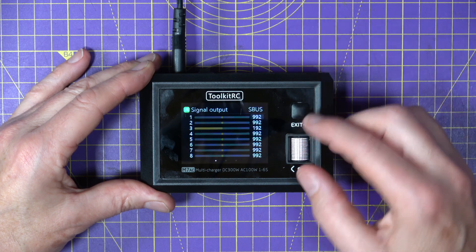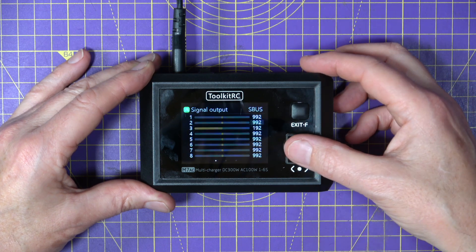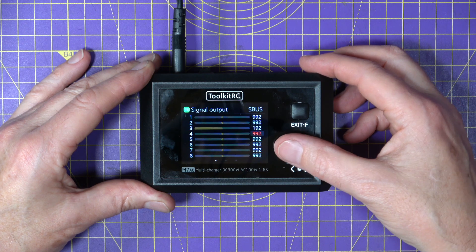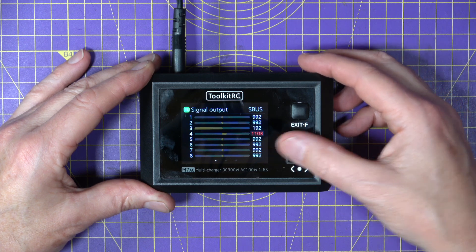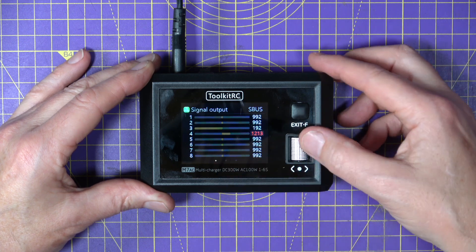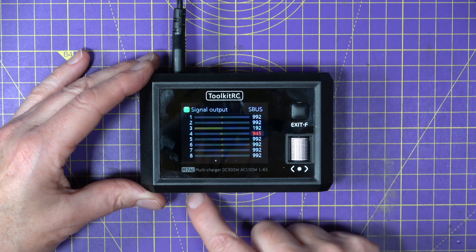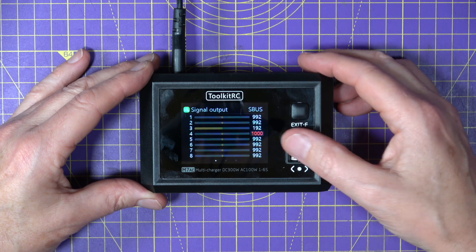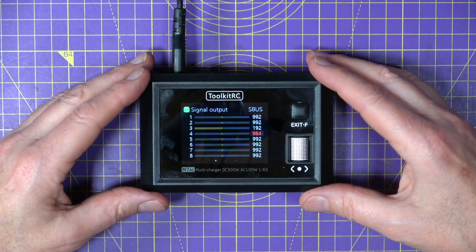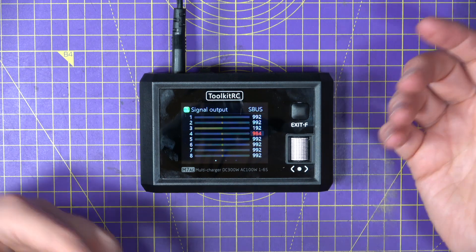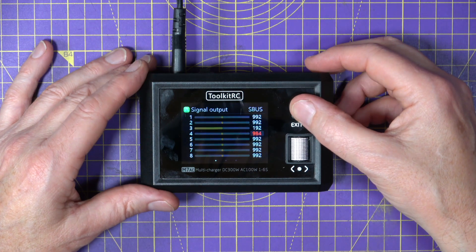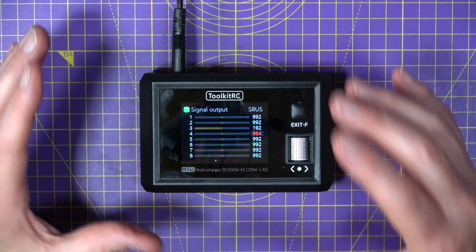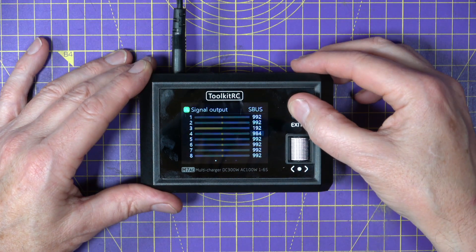So we can generate PWM, PPM and S bus. So on here I could select S bus, oops if I could do it properly, there we go. And then I can wind this around, let's say on channel 4, I can generate a signal, you can see it's moving, coming down up and down here. So this is plugged directly into your flight controller, you should see it in Betaflight or iNav whatever you're using but it's a way of testing whether your receiver or your flight controller is not working correctly. It's very useful.